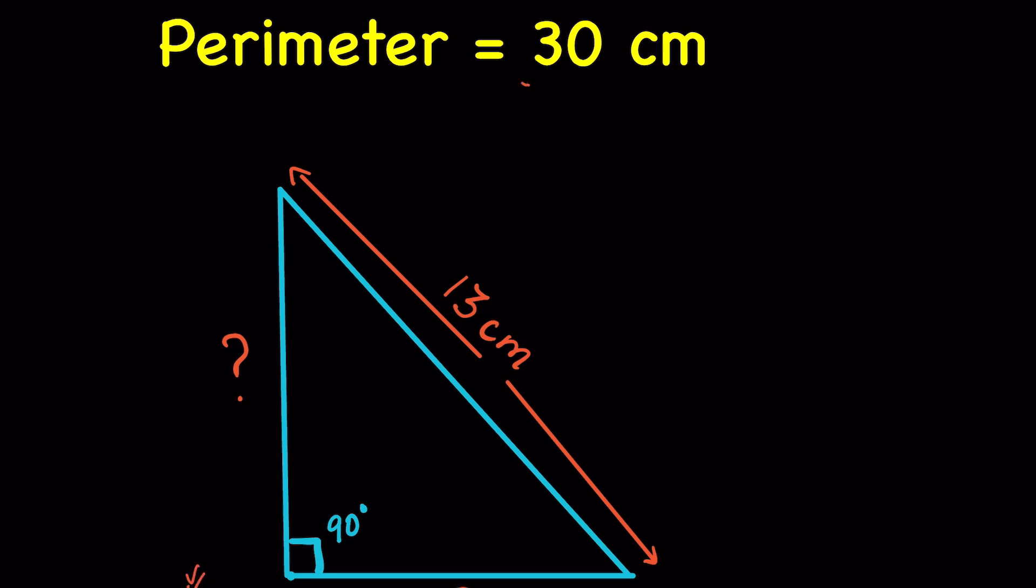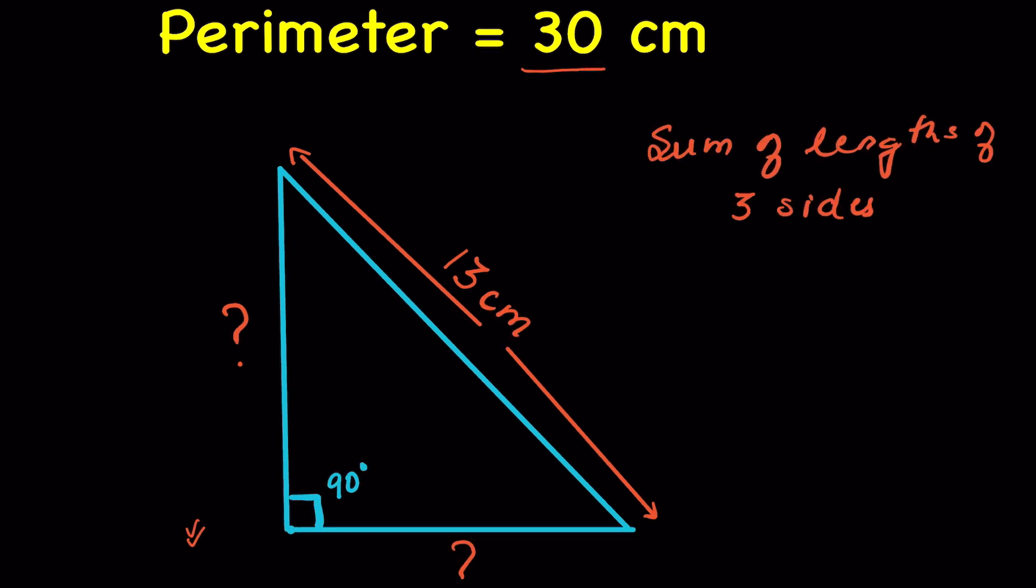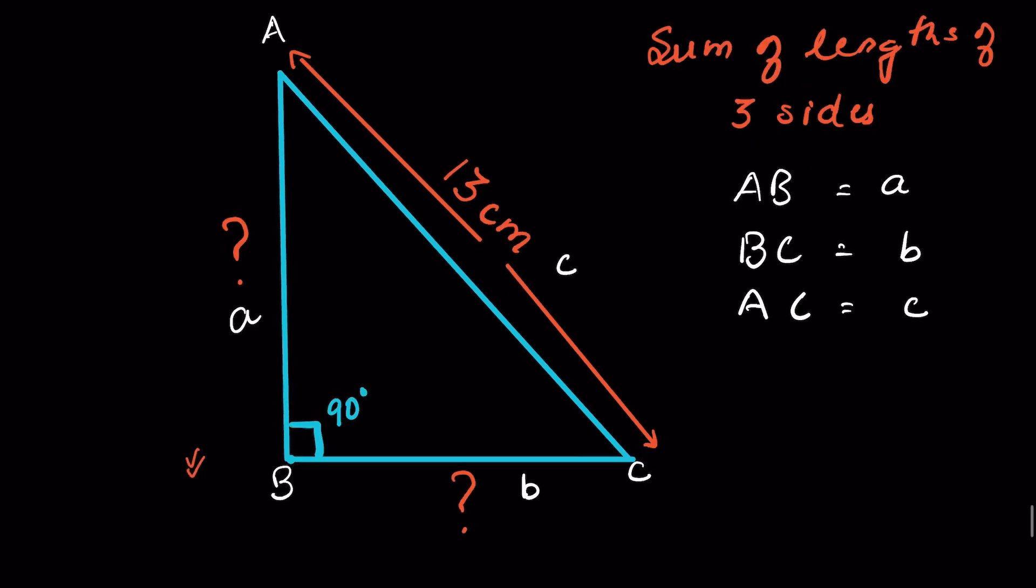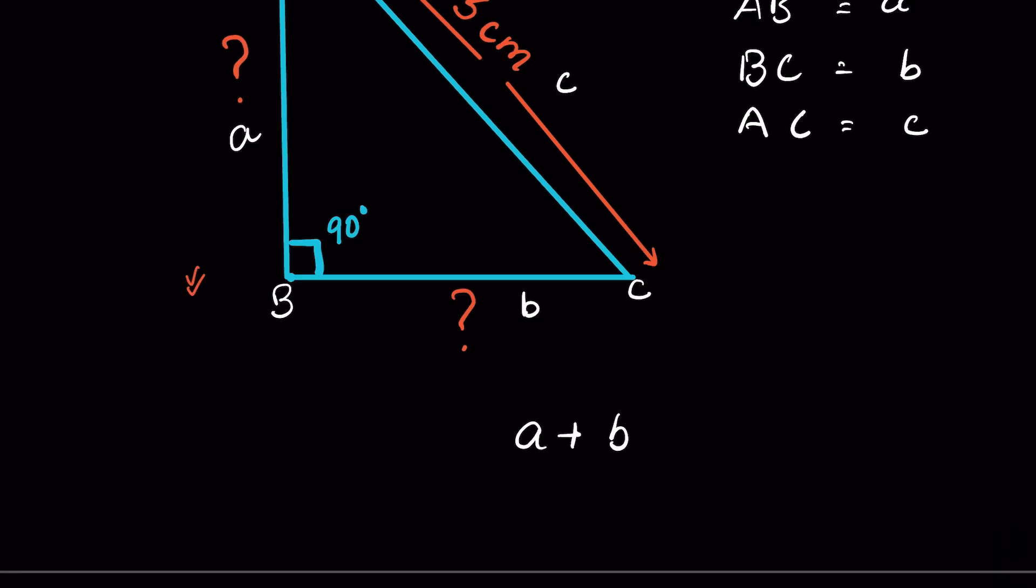Perimeter is 30 cm. The perimeter of a triangle is the sum of the lengths of the three sides. Let this be triangle ABC. Let AB be lowercase a, BC be lowercase b, and AC be lowercase c. As per the given question, a + b + c = 30 cm.